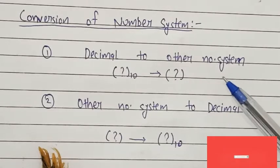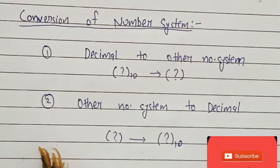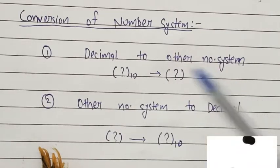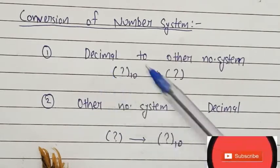So overall, there are six conversions that we will perform one by one. So first, we will see decimal to other number systems, and we will consider first the decimal to binary.